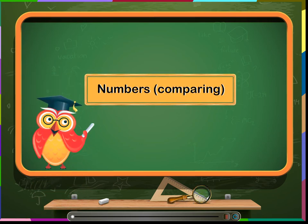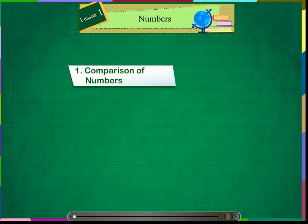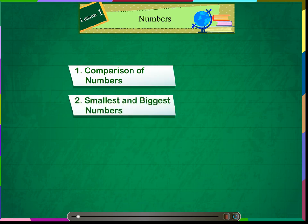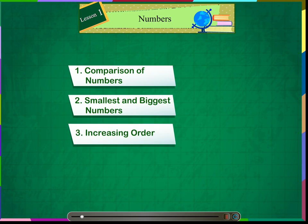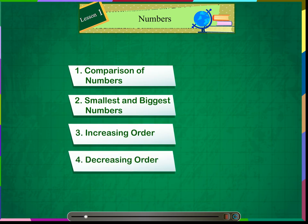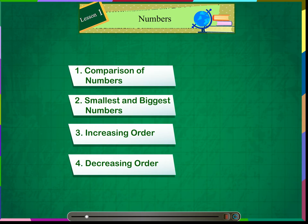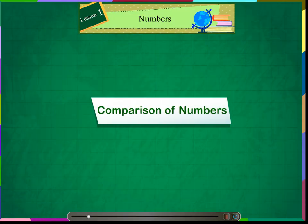Numbers comparing. 1. Comparison of numbers. 2. Smallest and biggest numbers. 3. Arranging numbers in an increasing order. And 4. Decreasing order.